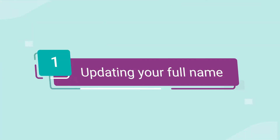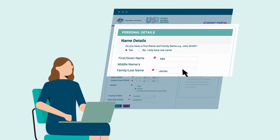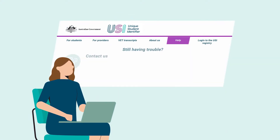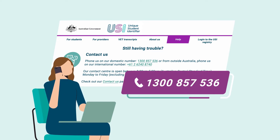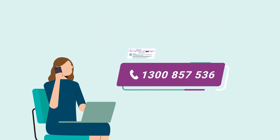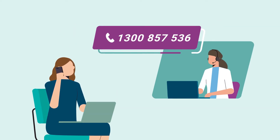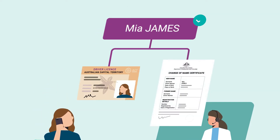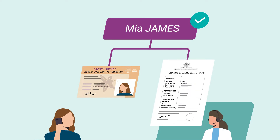Number 1: Updating your full name. If you need to change both your first and last name, you'll need to reach out to our contact centre on 1300 857 536. Our team will be able to give you a hand once you've proved your identity. Just make sure you've got some valid forms of ID handy that demonstrate your name change.